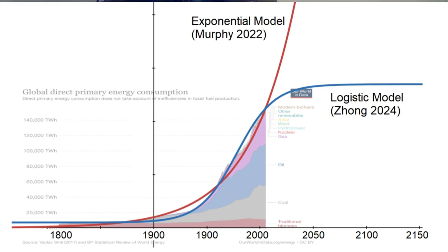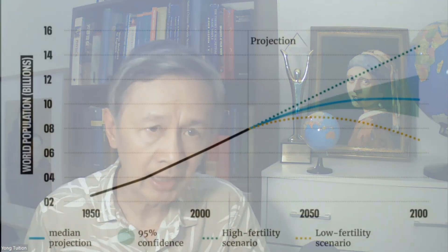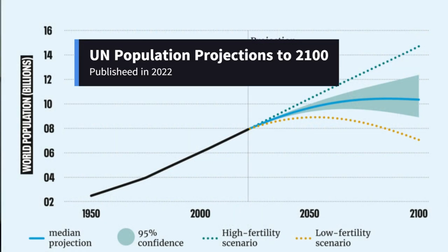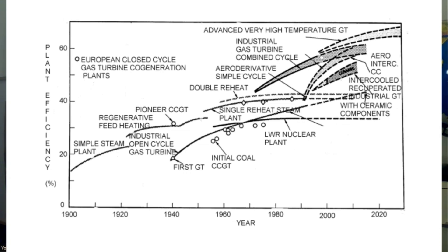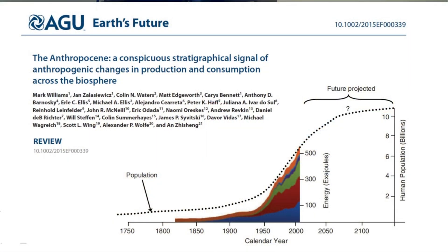By way of contrast, Tom Murphy's exponential model is not as good as the logistic model, as shown in this picture. How is the logistic model more realistic? First, human population does not increase exponentially, as shown in this UN projection from the same year Murphy's paper was published in Nature. Second, the efficiency for manufacturing and running machines has been continuously increasing. Therefore, the cost of raising living standards for developing countries will be much lower than what it was in developed countries in the past. Based on my intuition, I found a diagram in a recent paper written by many specialists, and as you can see, my speculation is by no means groundless.